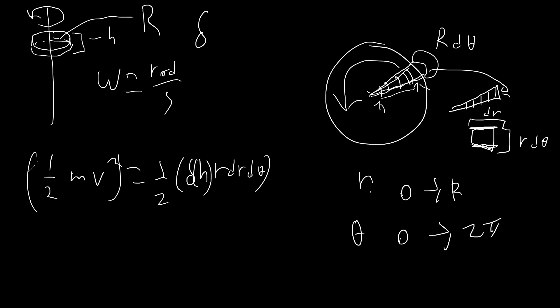The only thing left is v squared. If something is r distance out and the whole object is rotating at omega radians per second, that particle is moving at r times omega units of distance per second. So v equals r times omega, and v squared equals r squared omega squared. If we reorganize and pull out all the constants, we end up with delta * h * omega² / 2 times r³ dr d_theta inside the integral.